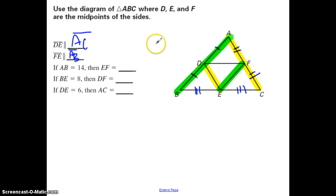Then it says if AB is equal to 14, so this entire segment is 14. It wants to know what's the length of EF. Remember, EF is going to be half of AB. So since AB is 14, EF will be 7. And then it tells us that BE, this segment right here, is 8. Then it wants to know the length of DF. Now here's the thing. BE is half of BC. That means that this whole segment is going to be 16. And then DF is half of BC. So half of 16 is going to be 8. Then lastly, it tells us that DE is 6, that segment, and it wants to know the length of AC. DE is 6, and that's half of AC. So 2 times 6 is going to be 12.